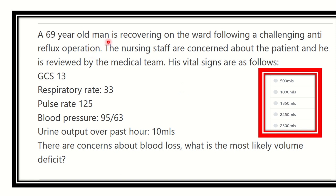A 69-year-old man is recovering on the ward following a challenging anti-reflux operation. The nursing staff are concerned about the patient and he is reviewed by the medical team. His vital signs are as follows: GCS 13, respiratory rate 33, pulse rate 125, blood pressure 95 over 63, and urine output over the past hour is 10 ml.